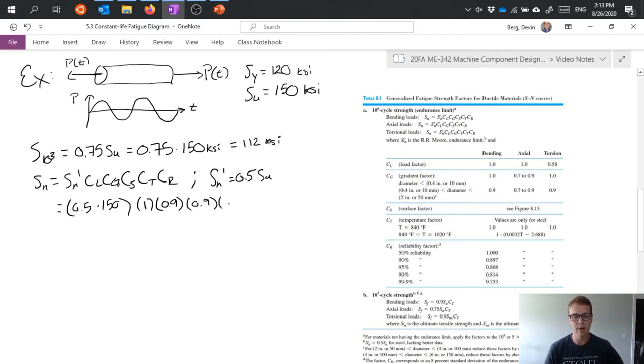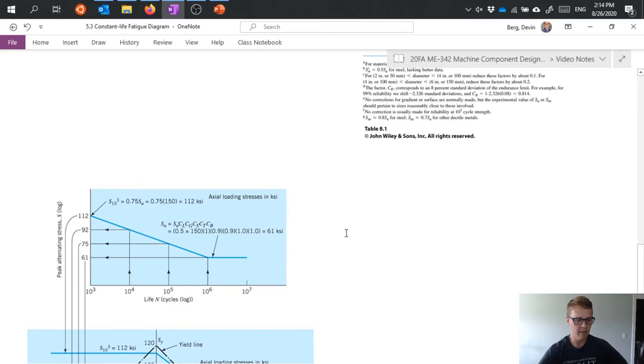Temperature, the problem doesn't say anything about having high temperature so we can go ahead and use one and reliability it doesn't specify anything that we want higher reliability so from our table over here we'll just start with the default of one. Great so we can calculate all that out and we end up getting 61 ksi for our endurance limit and that's pretty much all we need in order to fully define our SN chart.